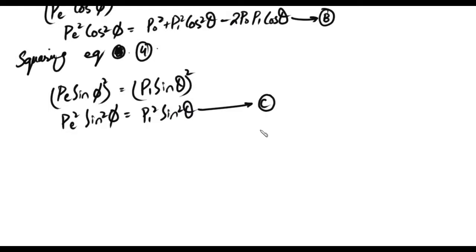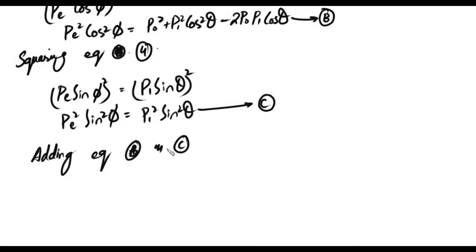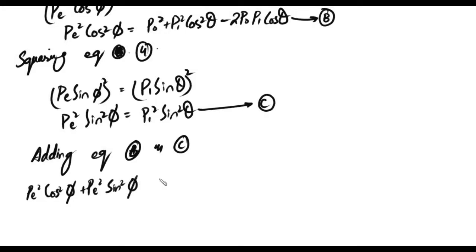What do we have to do? We have to add equation B and equation C. The left sides are added together and the right sides are added together. The left side gives us PE² cos²φ added to PE² sin²φ.